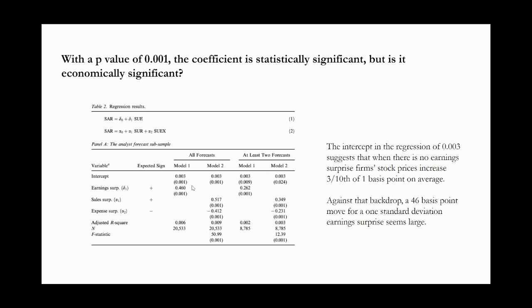So that's quite a small move for a zero standard deviation earnings surprise. Against that backdrop, a 46 basis point move for a one standard deviation seems pretty large. 46 basis points compared to three-tenths of one basis point if there's zero earnings surprise.